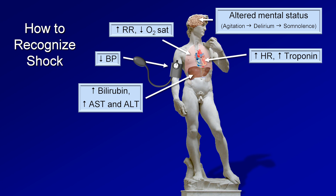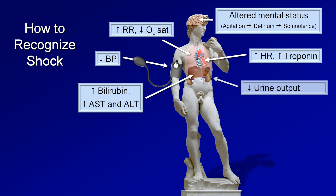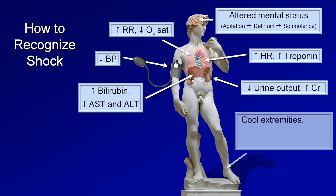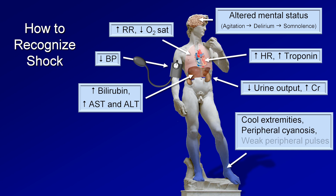Poor perfusion in the kidneys will immediately result in decreased urine output, followed shortly thereafter by a rise in serum creatinine. And with the extremities, they can be unusually cold, can display peripheral cyanosis, and patients will have weak peripheral pulses, which is a sign of low pulse pressure if a blood pressure cuff is not immediately available.